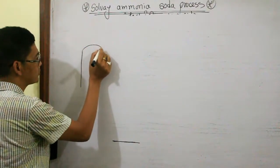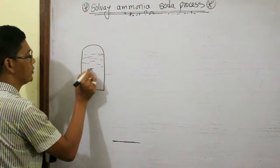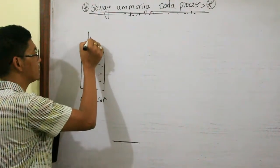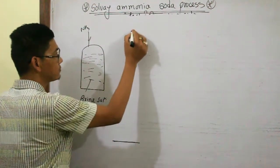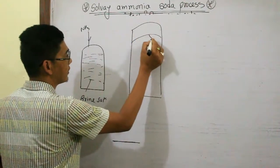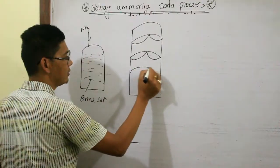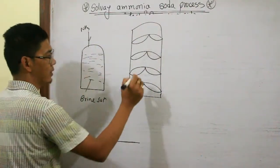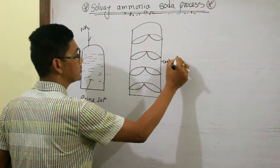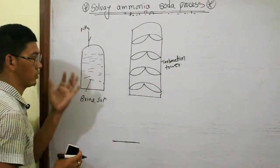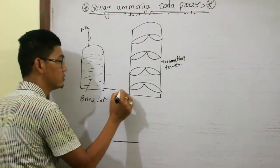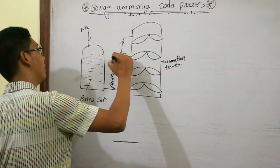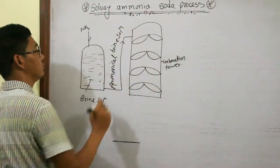Now with the diagram — this tank contains brine solution. Here ammonia is added. There is another tower. This is called the carbonation tower. Here brine solution and ammonia are mixed to form ammonium brine solution, and this goes into the carbonation tower along with CO2.